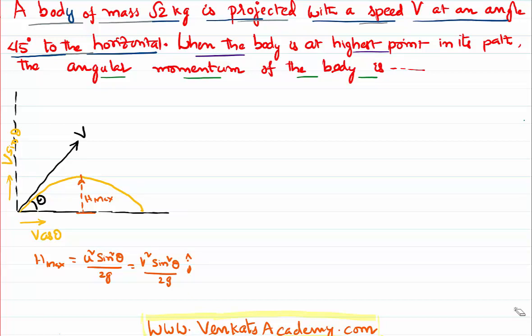Being at H maximum, when the height becomes maximum with respect to velocity, it becomes 0. So I can say at H maximum, velocity of the body along y axis, that's V sin theta, becomes 0.